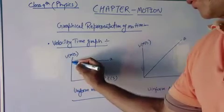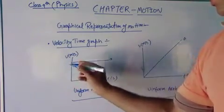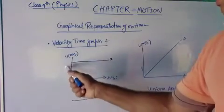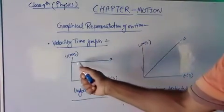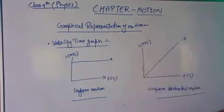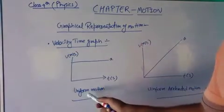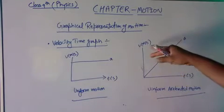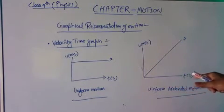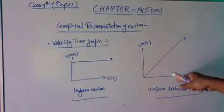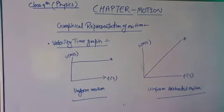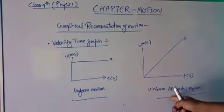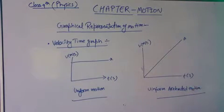If the velocity is constant — for example, 5 meters per second throughout — this type of graph represents uniform motion. When the graph has a positive slope with velocity increasing over time, the x-axis shows time and the y-axis shows velocity, meaning the graph gives us acceleration. This type of graph is called uniform accelerated motion.